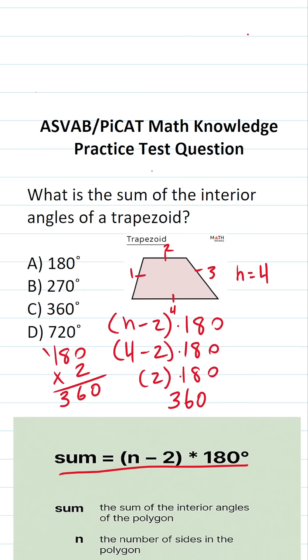So the sum of the interior angles of a trapezoid, which is a quadrilateral, is going to be C, 360 degrees.